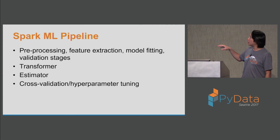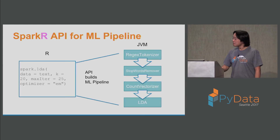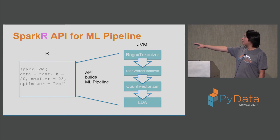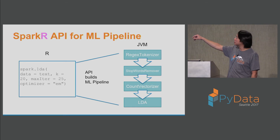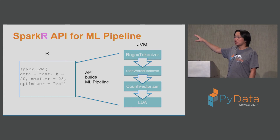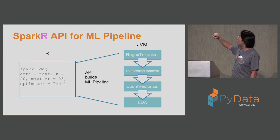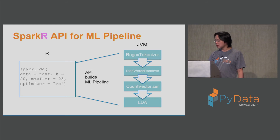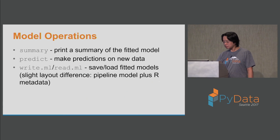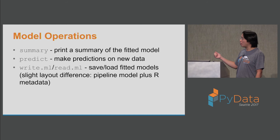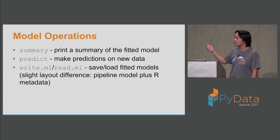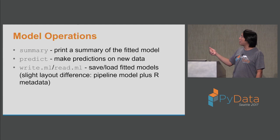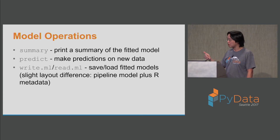Let's move to SparkR. Remember the Spark ML pipeline slide — in R, this is done slightly differently. You have an LDA API on the left: you pass in text with some configurable parameters. It automatically builds the ML pipeline for you in the JVM — creating a regex tokenizer, applying stop words, vectorizing everything, and then calling LDA. There are also more model operators you can use: take a look at the data summary, use the model for predictions on new data with the predict call, or save the trained model to use in other languages.